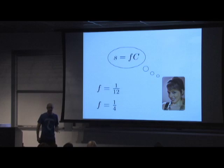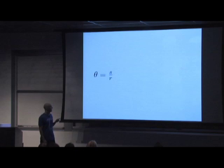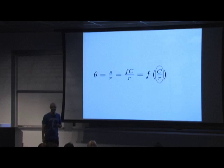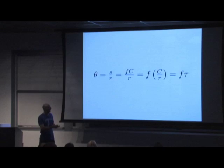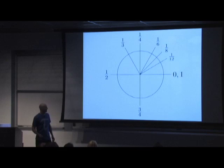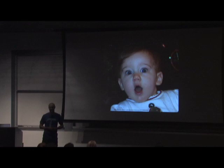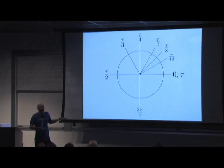For a twelfth of a turn, that fraction is one-twelfth. For a right angle, it's one-fourth, and so on. The radian angle measure θ = s/r equals f times C/r — which is f times τ. Notice how naturally tau falls out of this analysis. A twelfth of a turn is simply τ/12 radians. An eighth of a turn is τ/8, and so on around the circle, finally arriving at one full turn being one τ. To me this diagram is a one-diagram proof that tau is the right way to characterize the geometry of a circle.